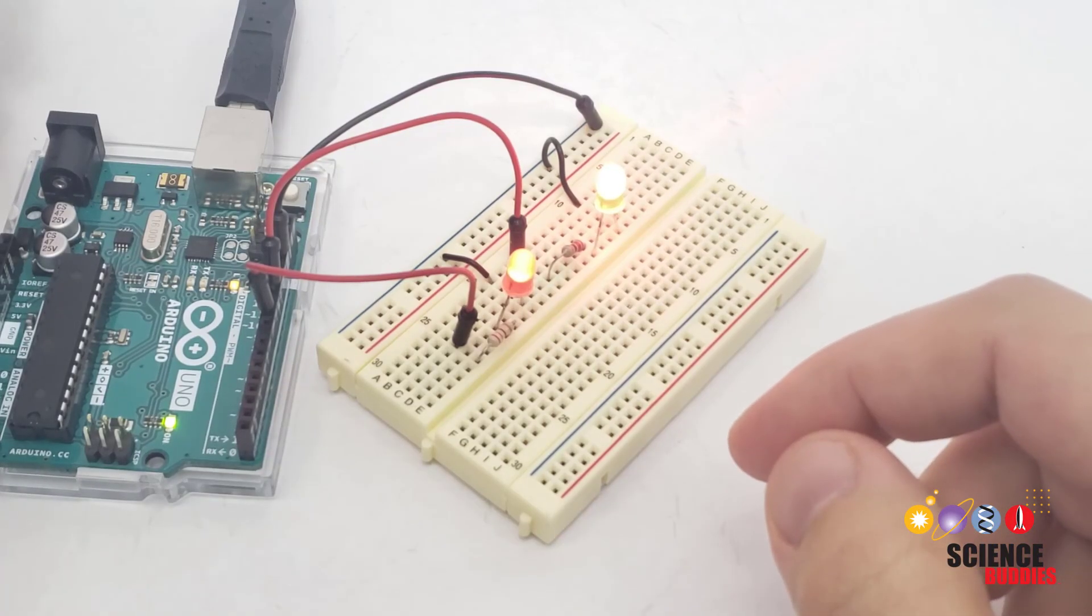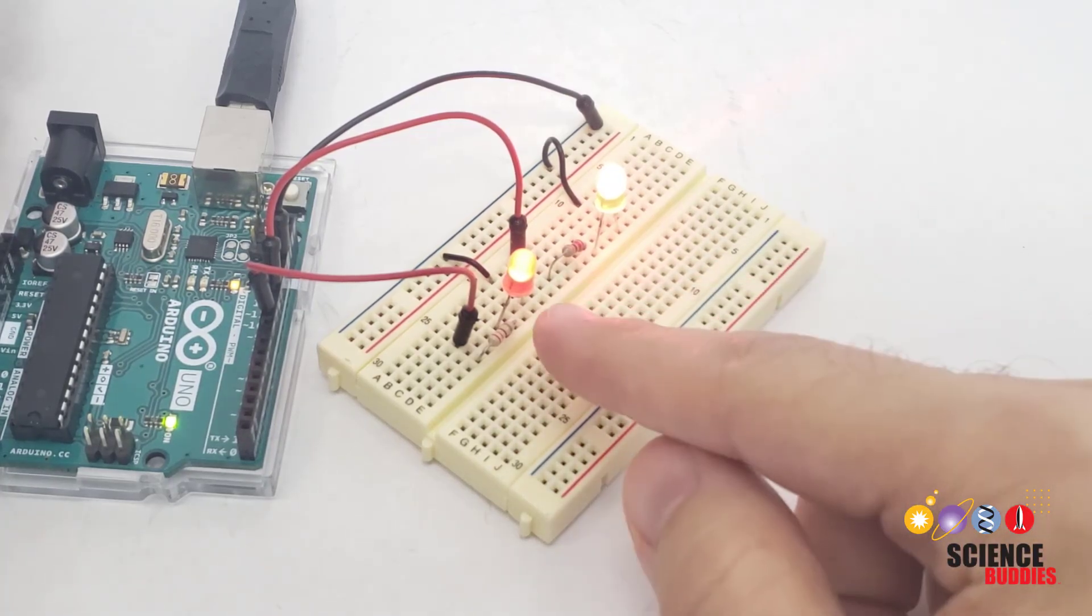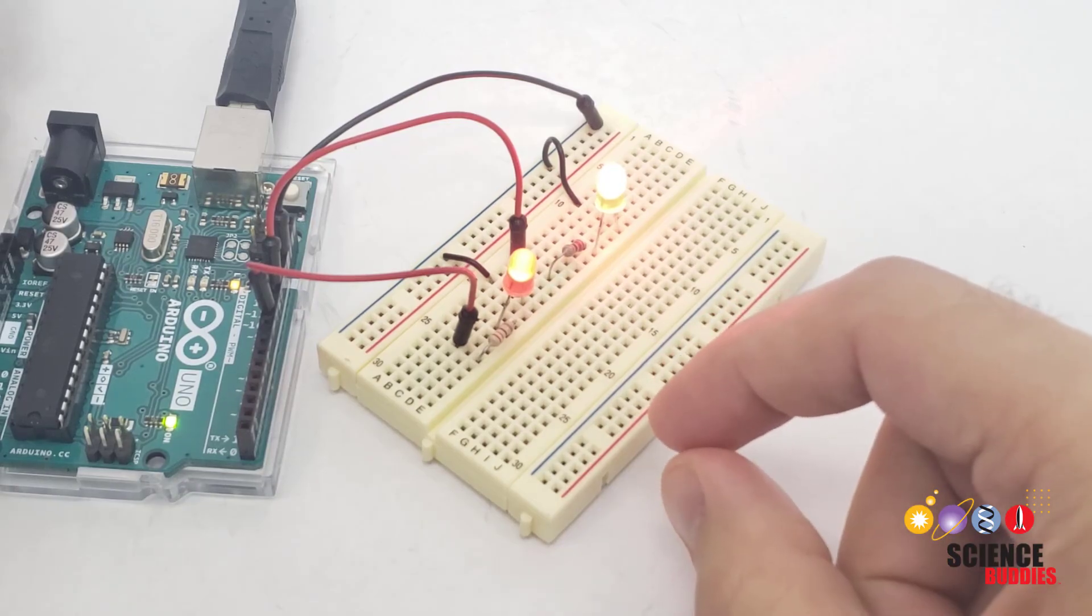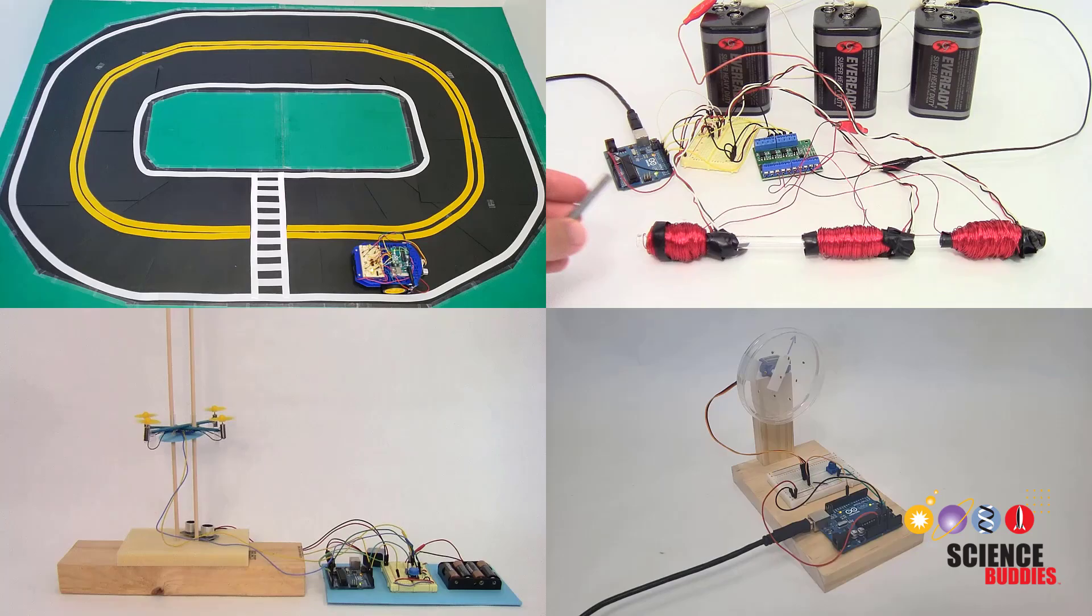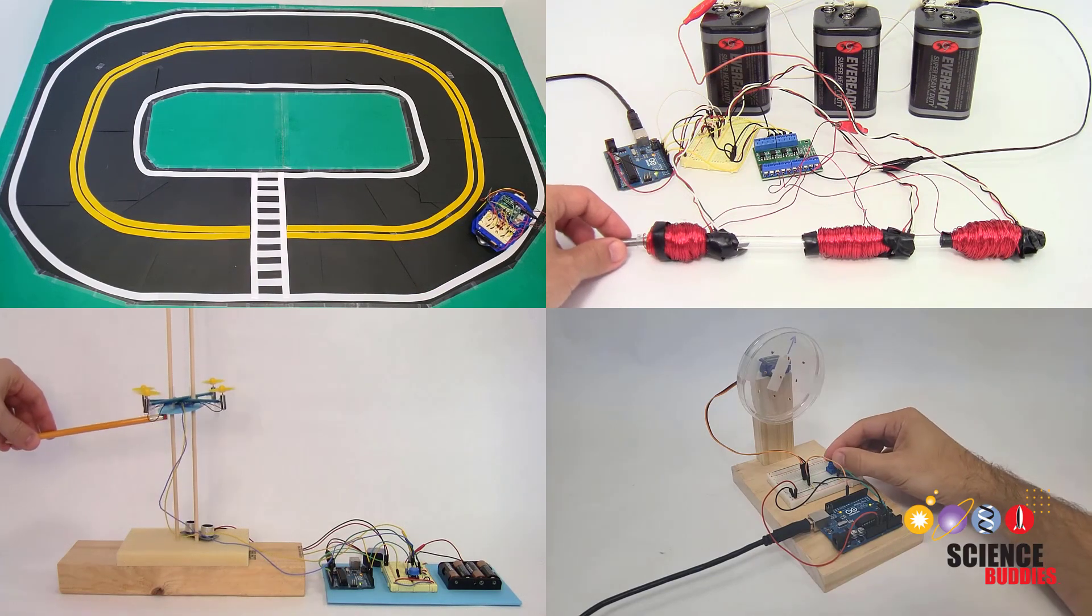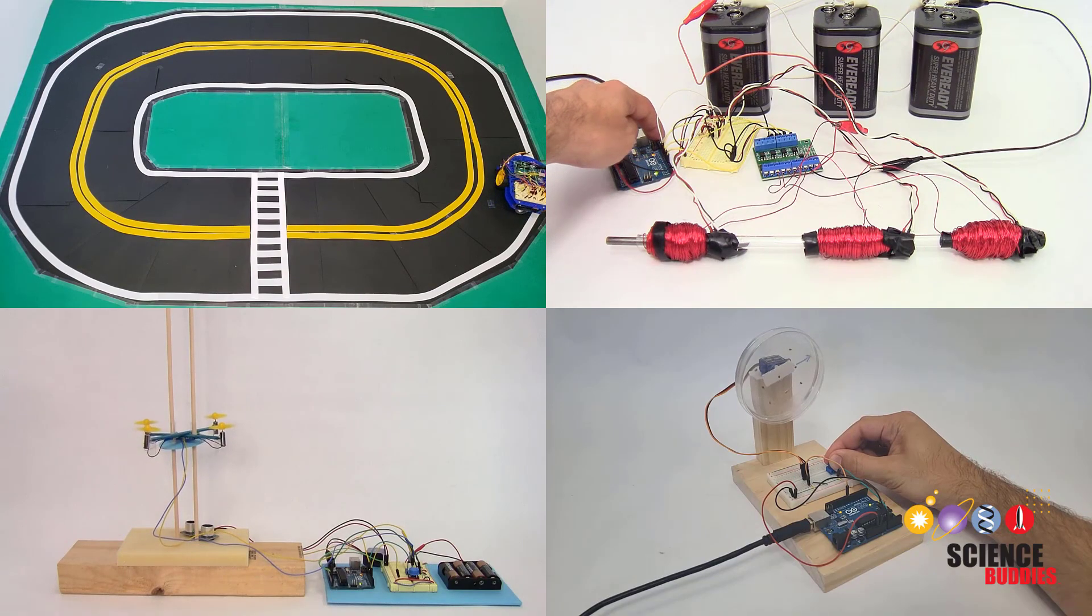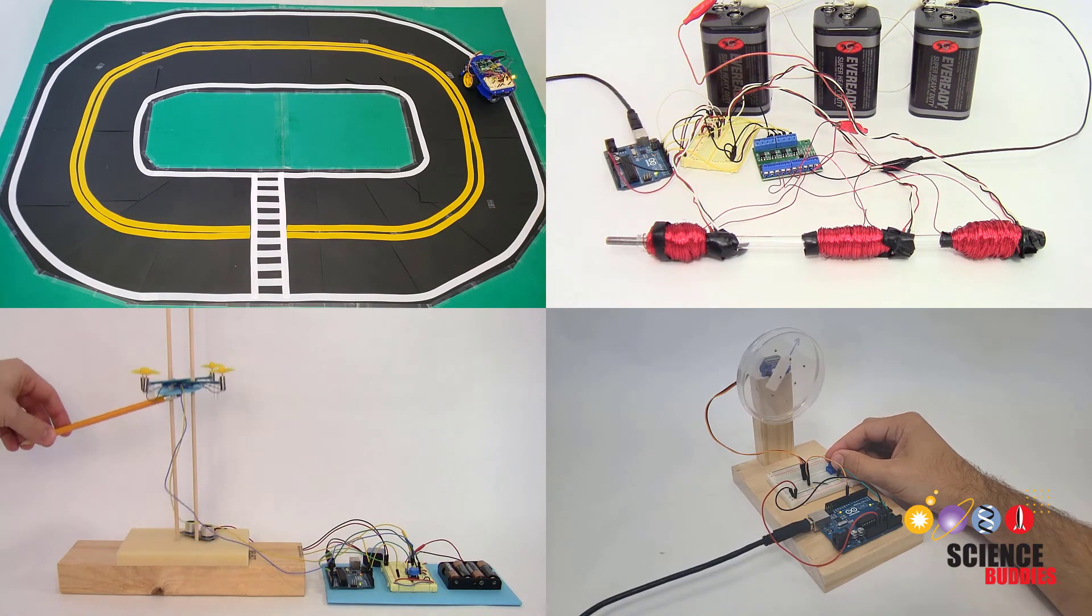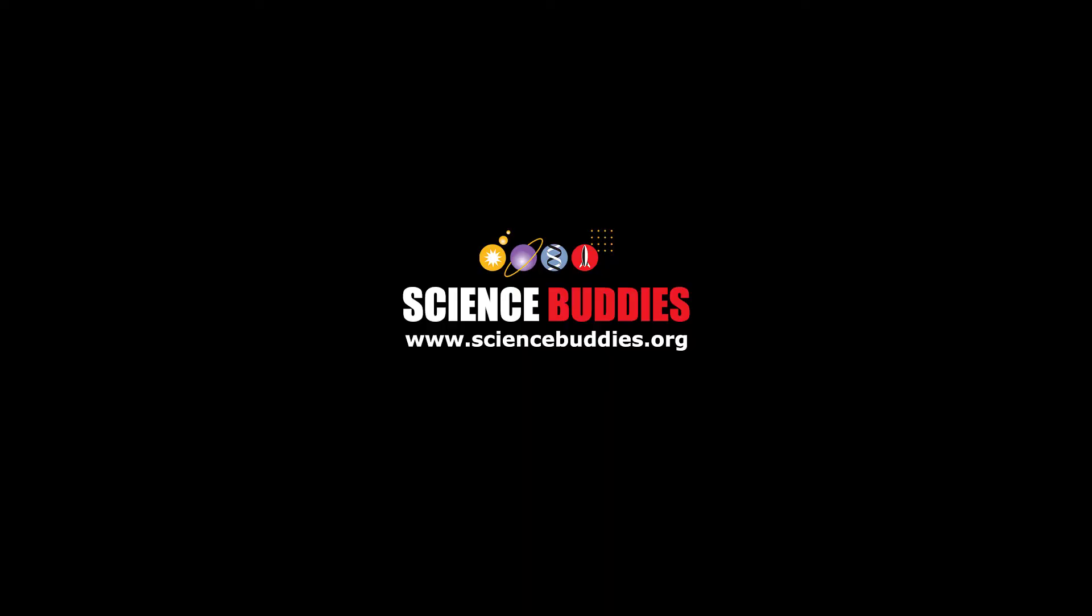The analog write function is useful if you want to control something with a continuous range instead of just turning it fully on or fully off. Later in this video series, we'll see how you can also use it to control the speed of a motor. For more Arduino tutorials and lots of cool projects you can do with an Arduino, check out the links in the video description. For thousands of other fun hands-on science and engineering projects, visit us online at www.sciencebuddies.org.